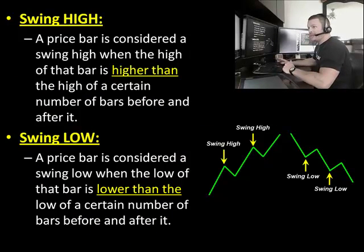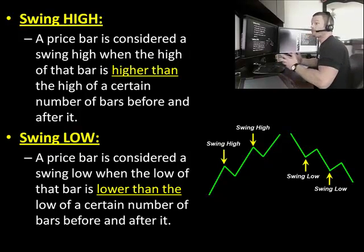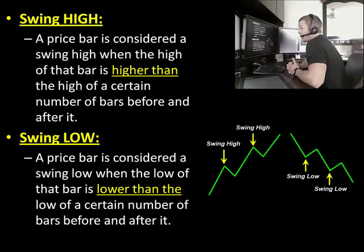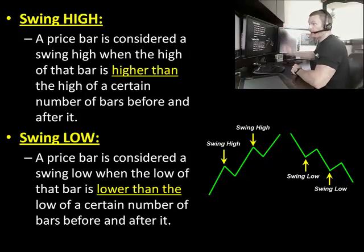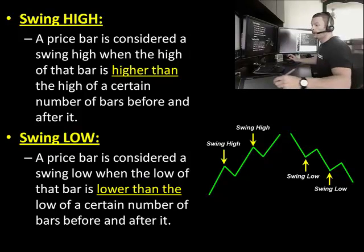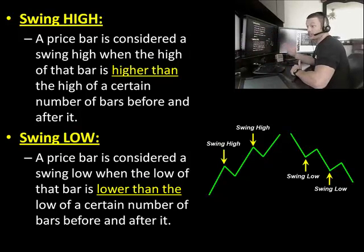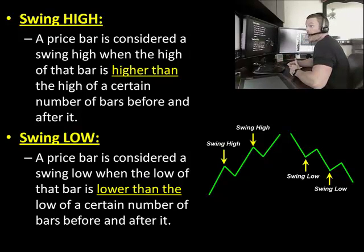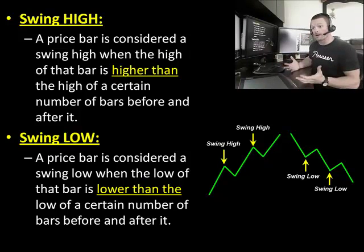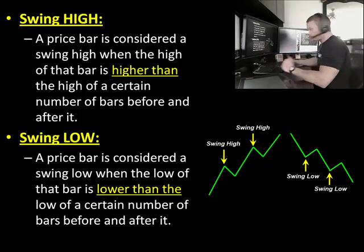A swing high is a price bar — it's considered a swing high when the high of that bar is higher than the high of a certain number of bars before and after. Basically, a swing high is when price swings up and creates a new higher high than the previous swing high. You can see some swing high levels here in the lower right-hand corner of your chart. Your swing low is when the low of the price bar is lower than a certain number of bars before it. A swing high is when the high of a bar is higher than the previous high; a swing low is when the low of the bar is lower than the previous low.